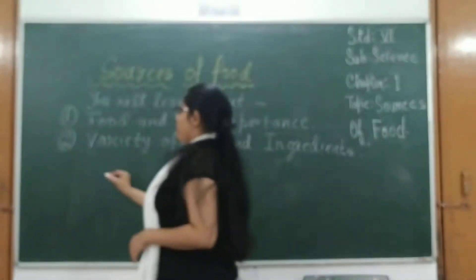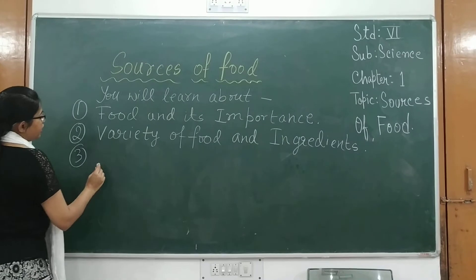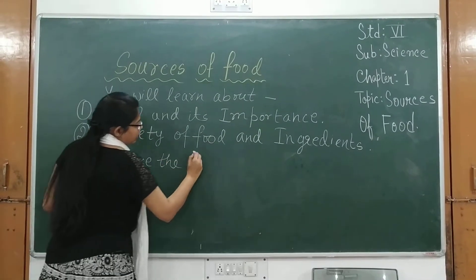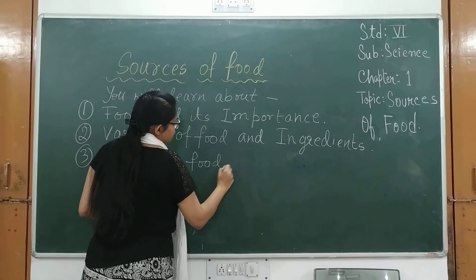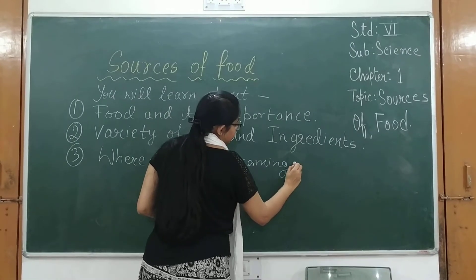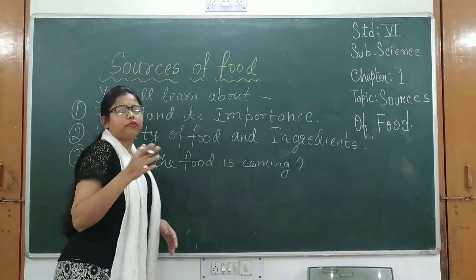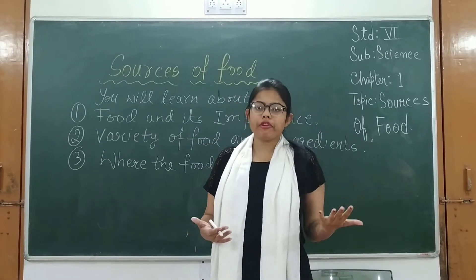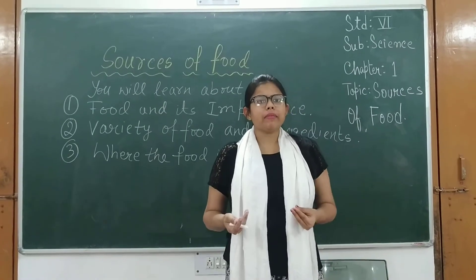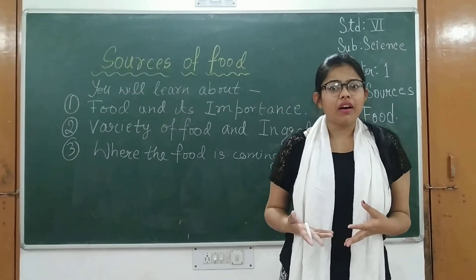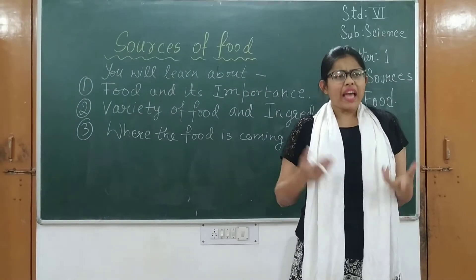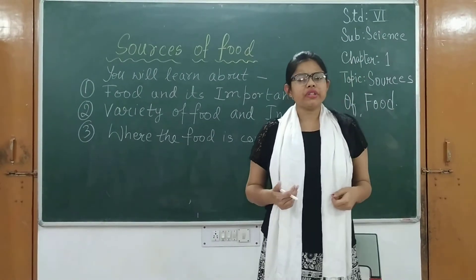The third topic you will learn is from where the food is coming. Food is definitely coming from somewhere — whether it is coming from plants or it is coming from animals. For example, milk. Now milk is coming from an animal, like a goat or cow, and sometimes camel milk we also drink.